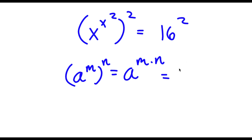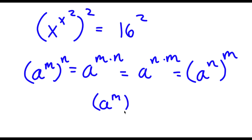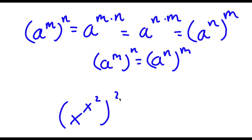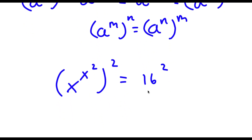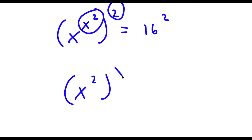And m and n are interchangeable, meaning this is also equal to a to the power of n times m. So a to the power of m to the power of n is equal to a to the power of n to the power of m — these two are equal. So here we have x to the power of x to the power of 2 to the power of 2. We can think of x to the power of 2 as m and 2 as n, so we switch these two places. Now we have x to the power of 2 to the power of x to the power of 2 is equal to 16 to the power of 2.